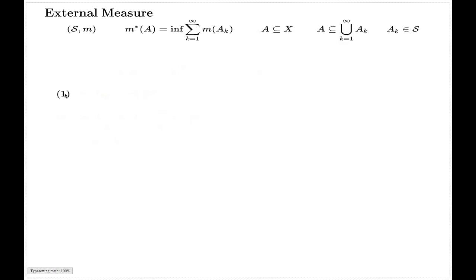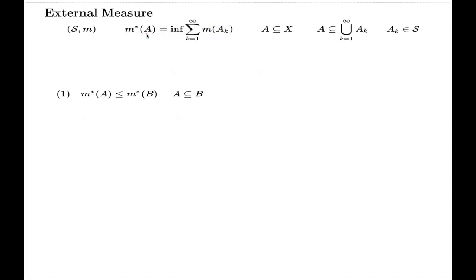We will show that the external measure of a set A is always less than or equal to the external measure of set B if A is a subset of B. This follows from the fact that every covering for B is also a covering for A, which means the collection of all coverings for A is at least as large as for B. Therefore the infimum for A runs over a larger collection and will be smaller.